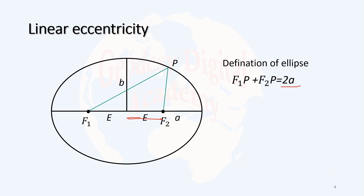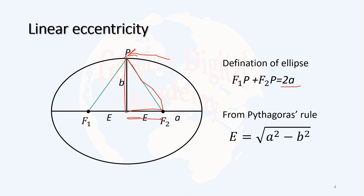Consider point P moving to the position of shortest distance from the center of the ellipse. In that case, we will have a triangle where PF1 and PF2 are equal, forming a right-angle triangle. Therefore, based on the Pythagorean theorem, we can write that the linear eccentricity is the square root of the difference of the square of the semi-major axis minus the square of the semi-minor axis.